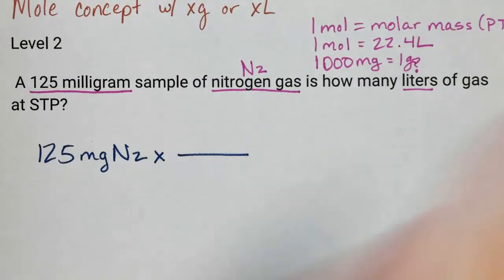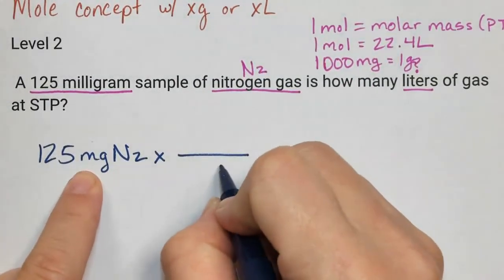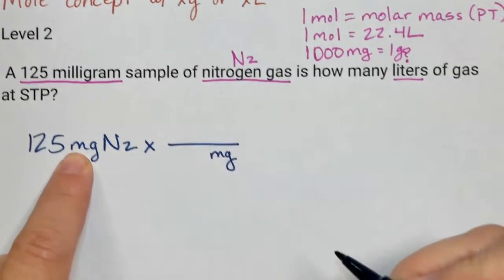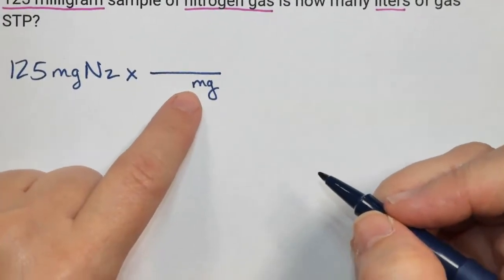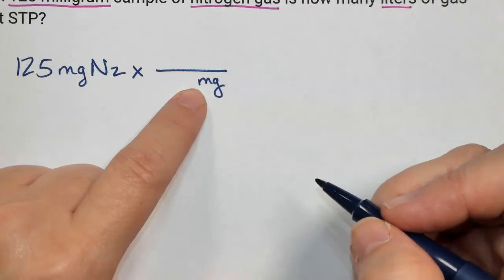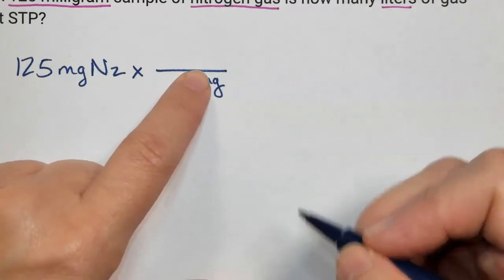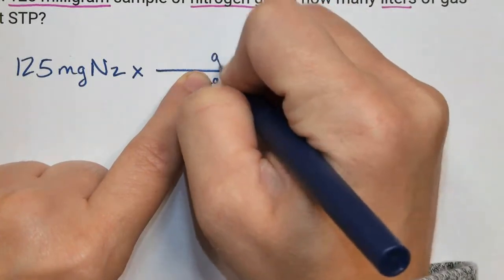So now I'm going to bring down the milligrams of nitrogen. And anytime you're wondering what should I do next, you want to cover the prefix and go to the base because you can do anything from a base unit.